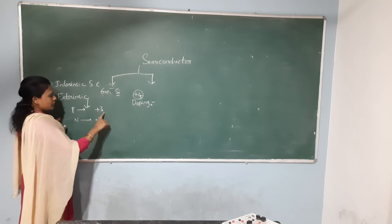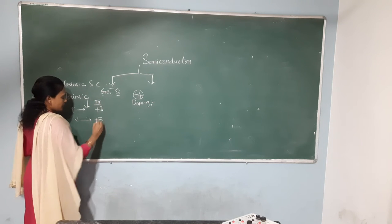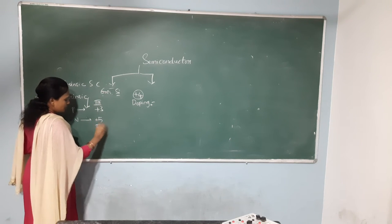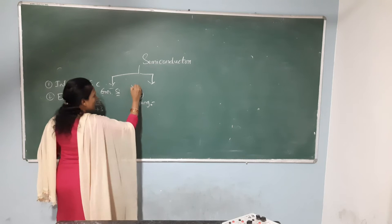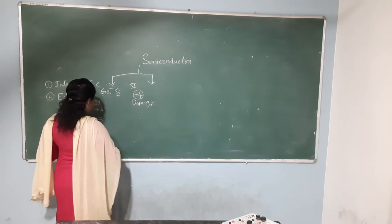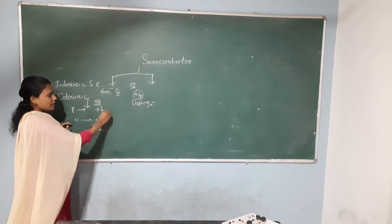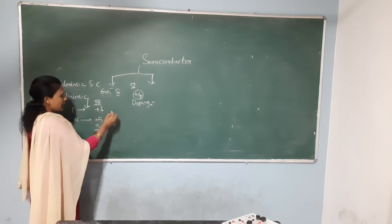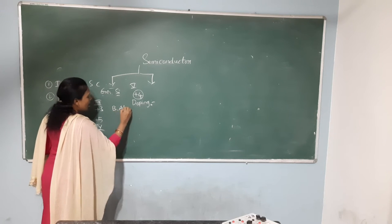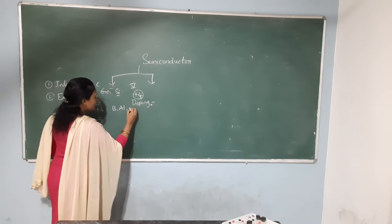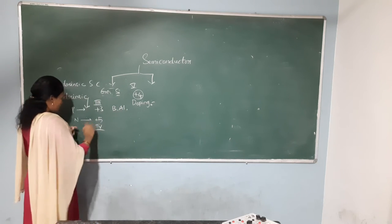Trivalent impurities are third group elements, and pentavalent impurities are fifth group elements. Intrinsic semiconductors like germanium and silicon are fourth group elements. Trivalent impurity examples include boron and aluminium.